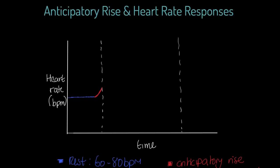Before we've started exercising we've got this increase in heart rate. Once we start our 20-minute run, shown in green, we have a continued, rapid increase in heart rate, then it levels off. Our aerobic, cardiovascular, respiratory, and metabolic systems are trying to get more oxygen to the working muscle through various mechanisms, including redistribution and increased heart rate. It's not immediate — when we start running, heart rate doesn't jump straight to, say, 140 bpm; it gradually gets there.